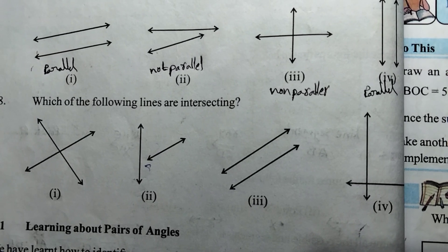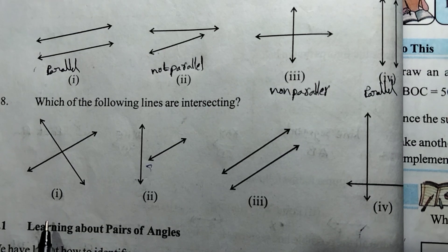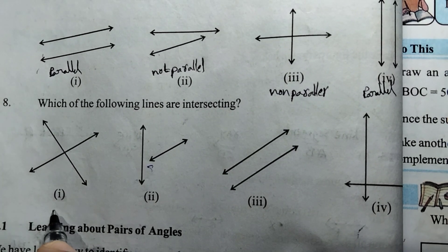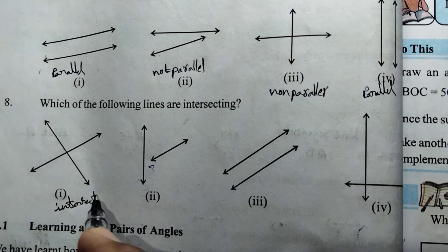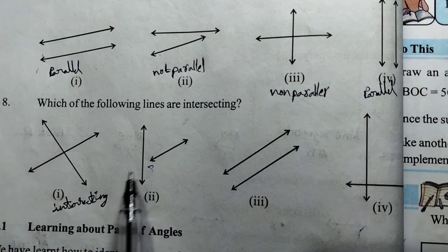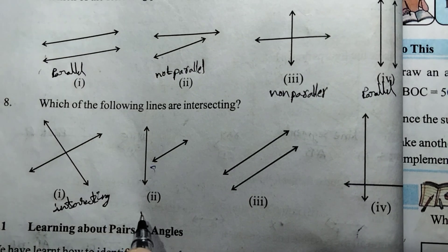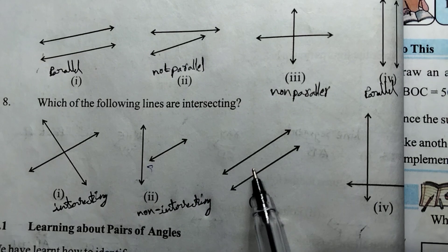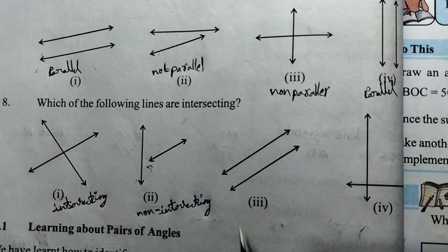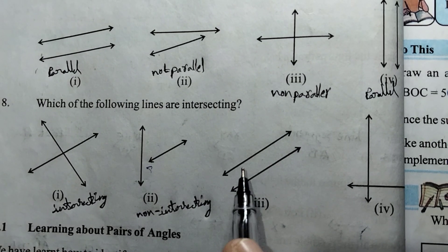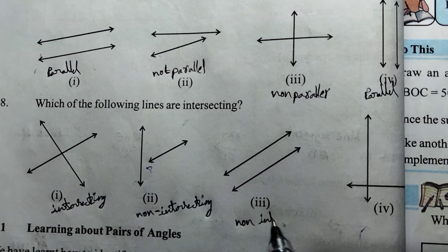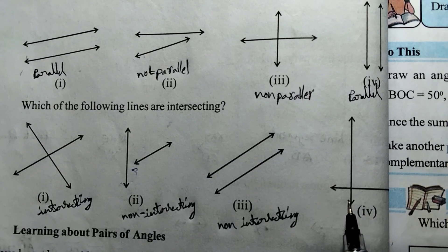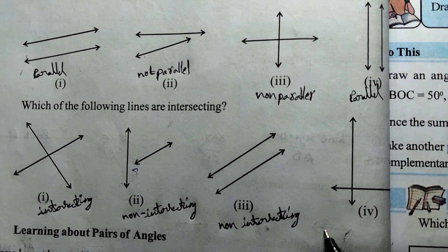Coming to the 8th question: which of the following lines are intersecting? Intersecting lines cross at a particular point. The first pair of lines intersect at a point, so the first answer is intersecting. The second pair of lines do not cross each other, so the answer is non-intersecting. The third pair are also not intersecting — they are parallel. The fourth pair of lines intersect and are perpendicular to each other, so the fourth answer is intersecting.